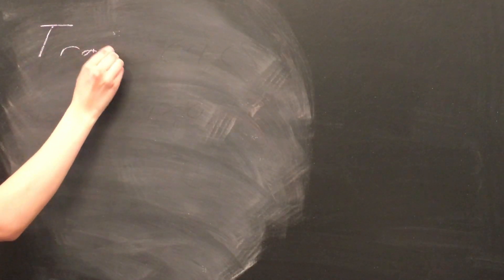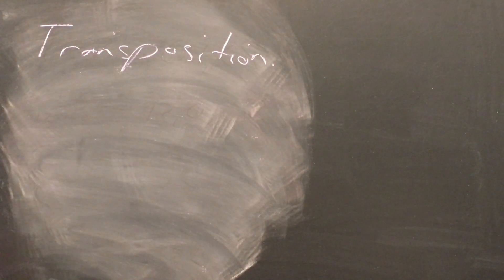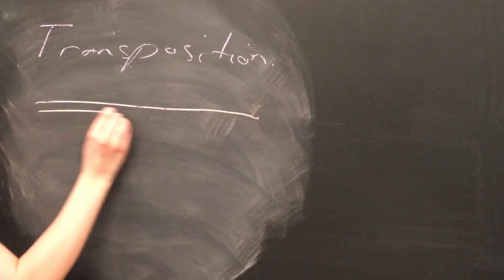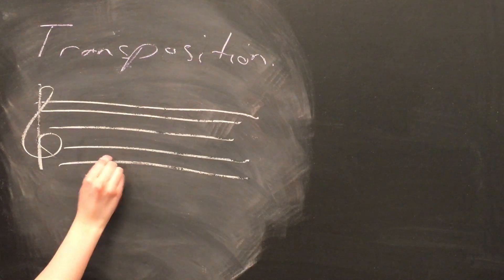This pitch class circle is pretty cool in a couple of ways. It allows us to visualize musical operations geometrically instead of just abstractly. For example, consider transposition. Transposition in music means to move all the notes in a given group of notes up or down in pitch by a constant number of semitones.